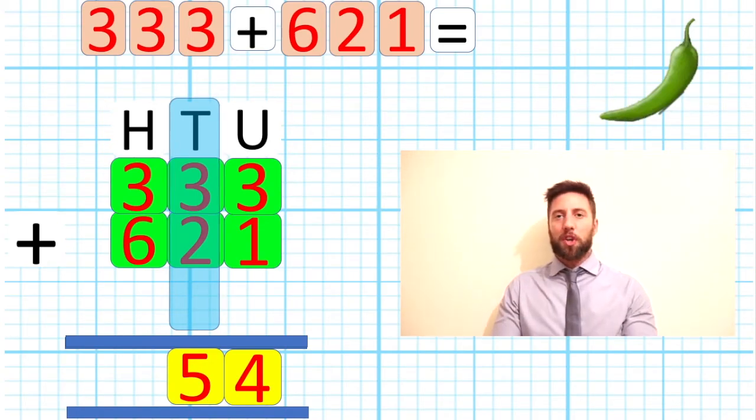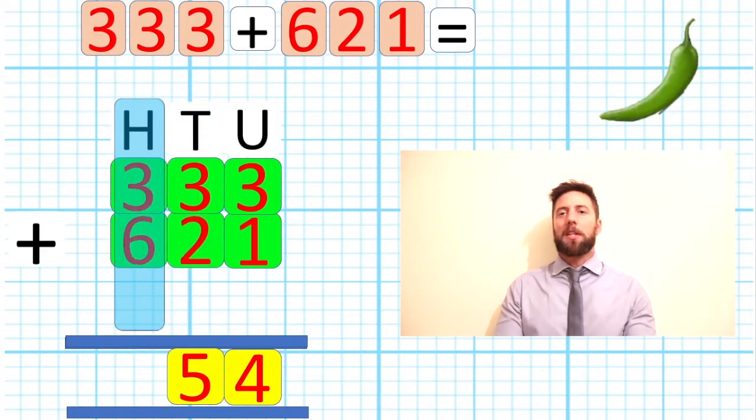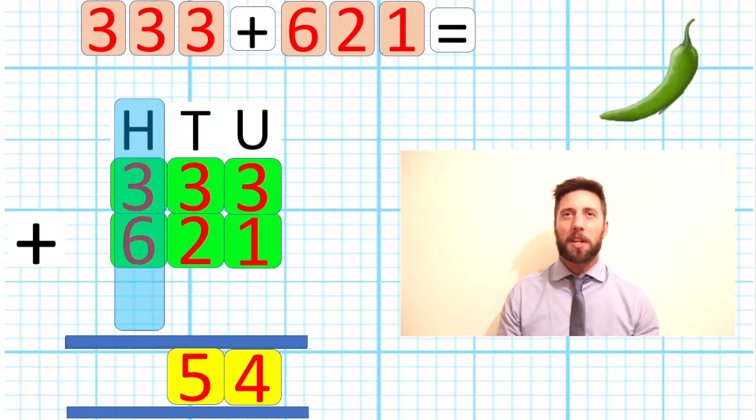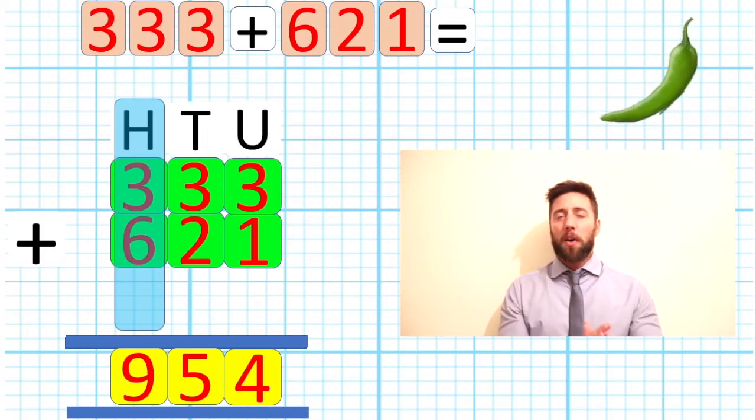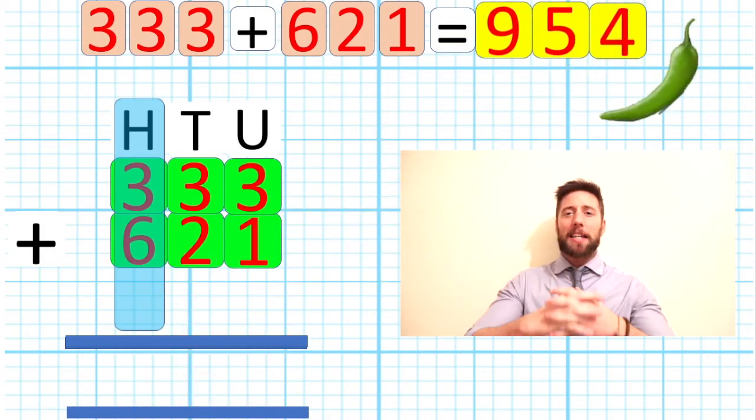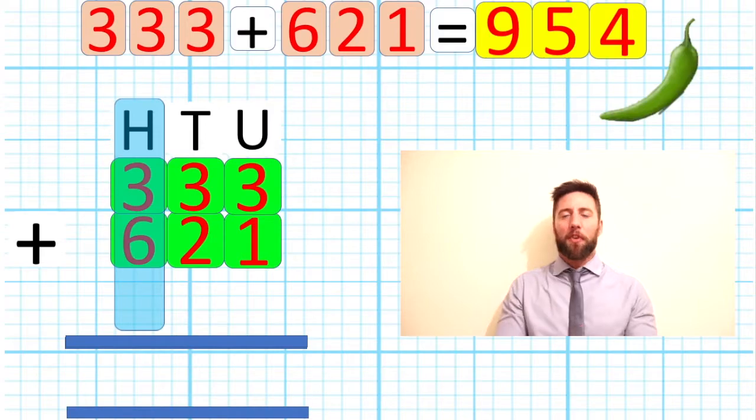Last but not least, we go into our hundreds column where we've got a 3 representing 300 and a 6 representing 600. Add the two together, we have 9 to complete our answer. So 333 add 621 is 954.